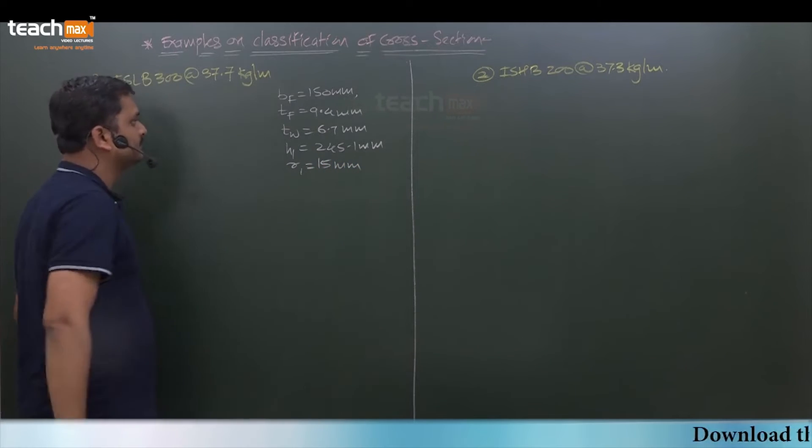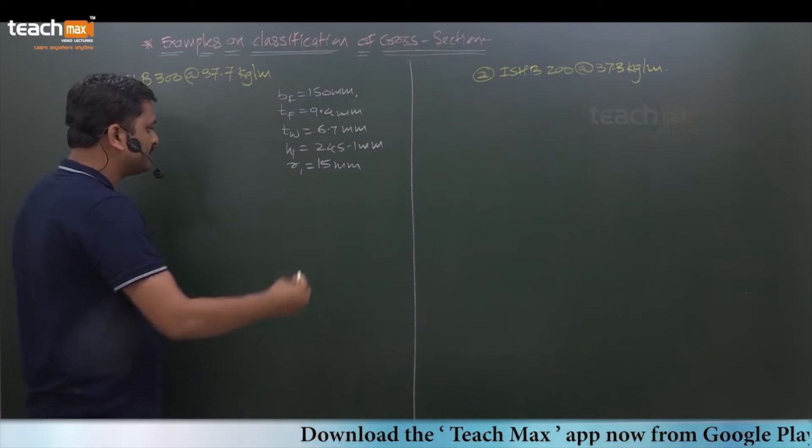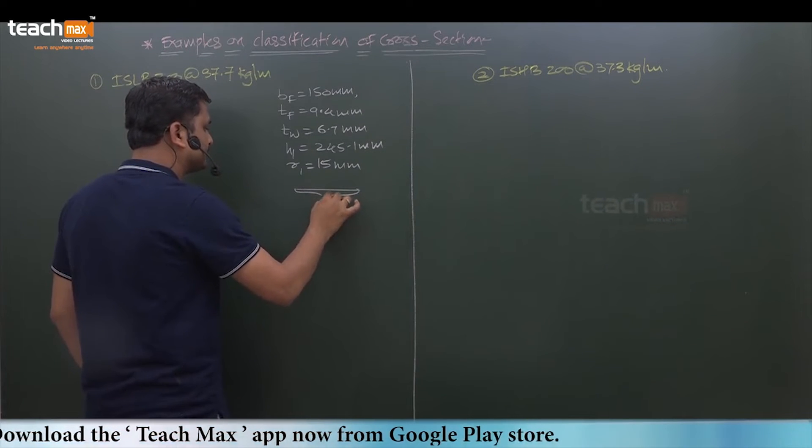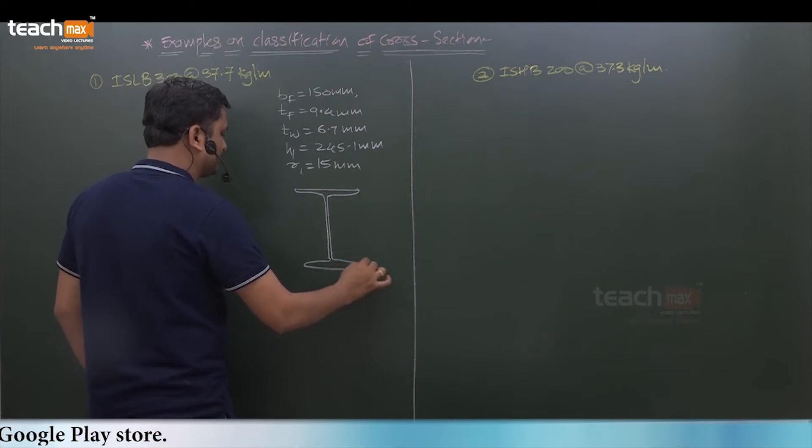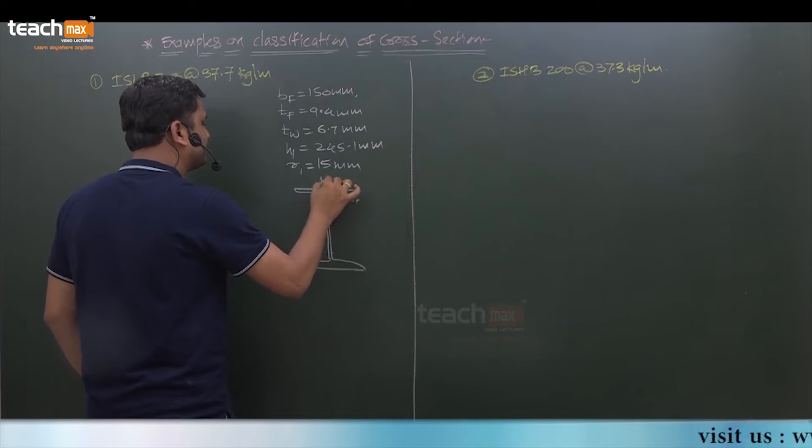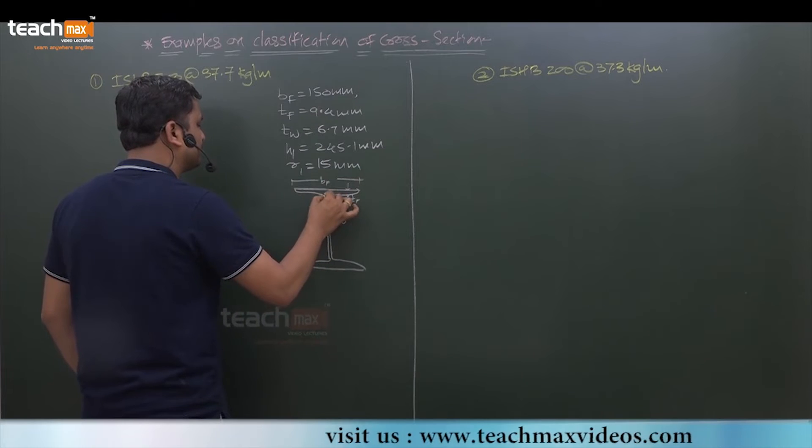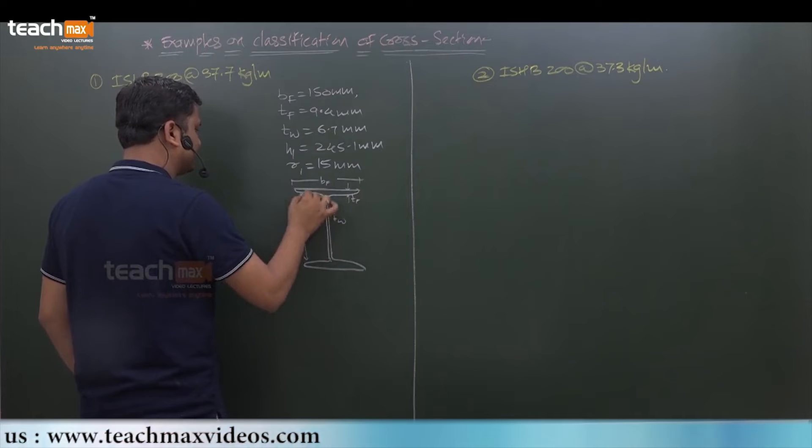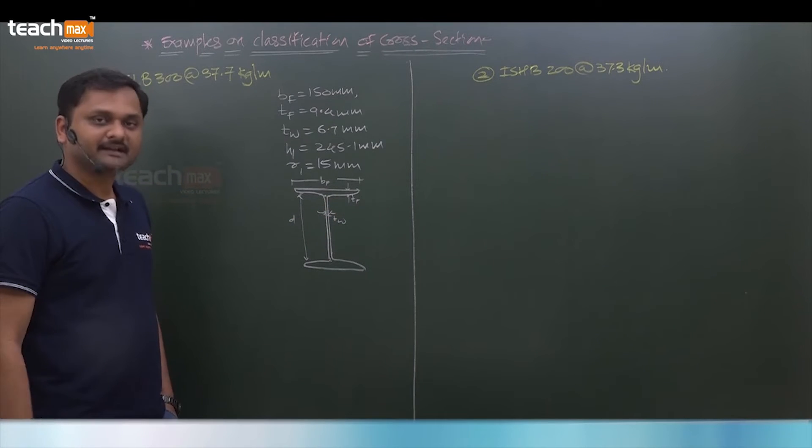These are the properties which are required for classification of section. Now if you observe the I section, flanges and this is the web. This is thickness of flange and this is width of flange. This is thickness of web and clear depth of web we need, that is we say d small d as per IS.